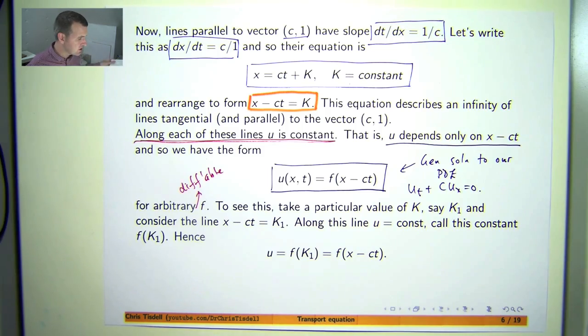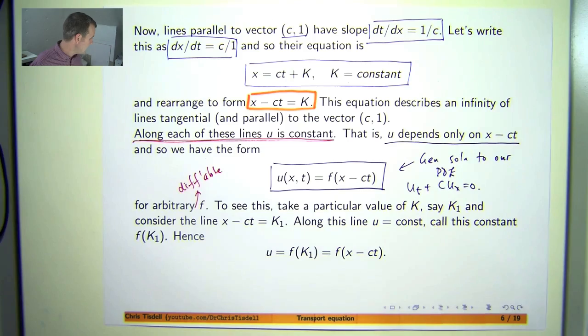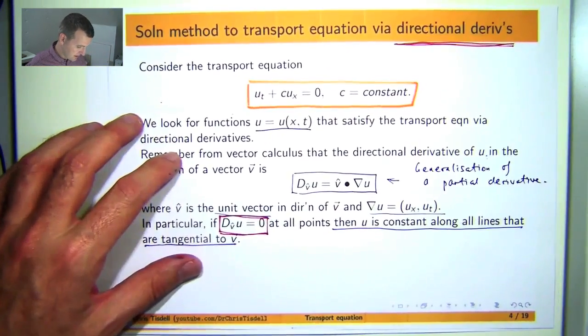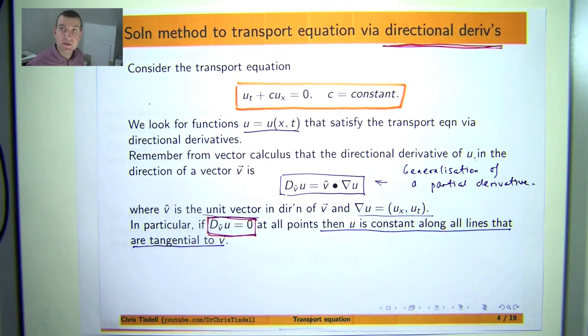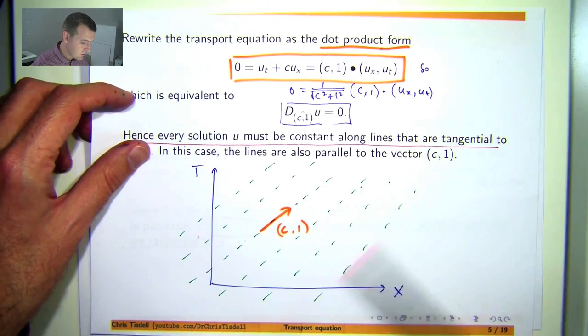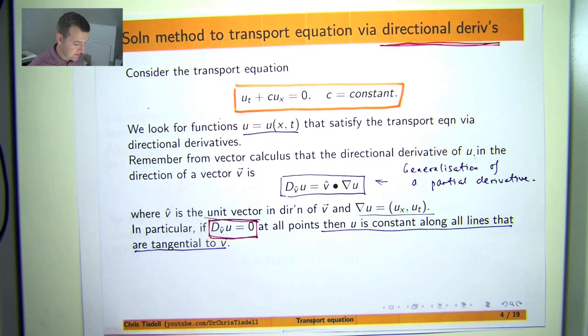So we've derived the solution using this nice directional derivative approach. There are other ways to solve this problem. For example, using the method of characteristics. So if you're familiar with that method, then each of these lines is called a characteristic curve or a characteristic line associated with our PDE. But, you know, I like the application of directional derivatives for this particular problem because it sort of ties back to vector calculus and shows you a nice application.